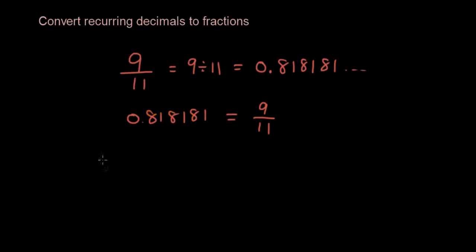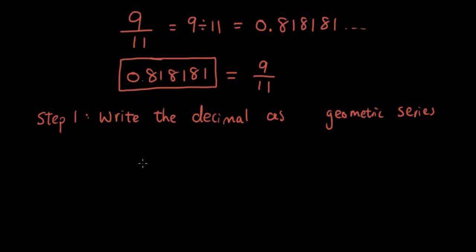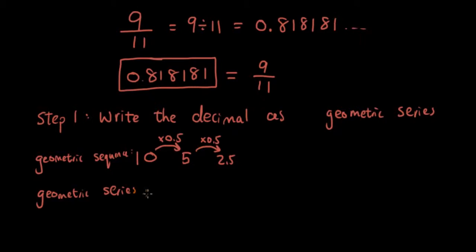Well, the first thing we want to do is write the recurring decimal as a geometric series. So what is a geometric series? Well, if you remember, a geometric sequence was when we had a list of numbers where to get to one number from the previous number, we multiplied by the same factor. So 10 times 0.5 is 5, times 0.5 again which will be 2.5, and so on. And that's a geometric sequence. But a geometric series is when we add up all the numbers in a geometric sequence.